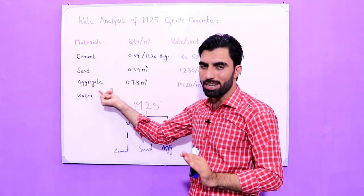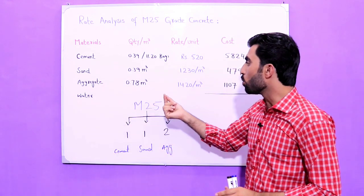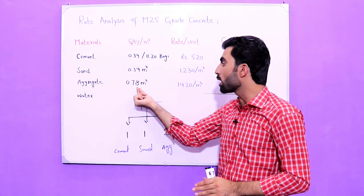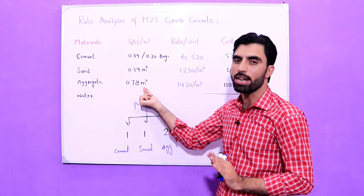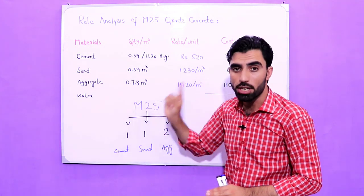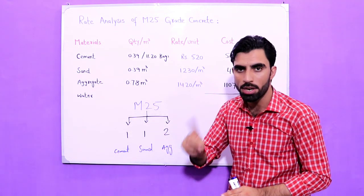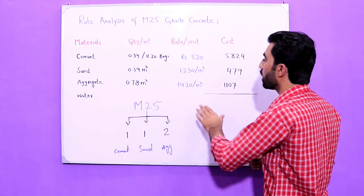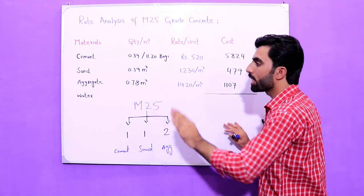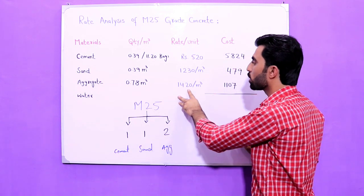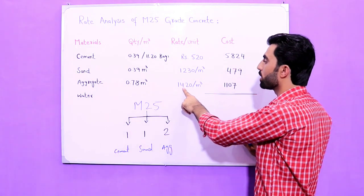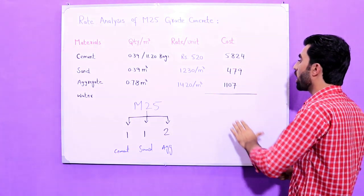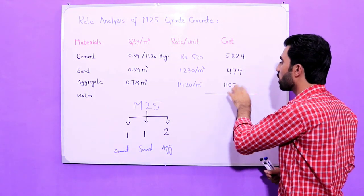For aggregate, we require 0.78 cubic meters of aggregate for one cubic meter of M25 grade concrete. The price of one cubic meter of aggregate is 1,420 Pakistani rupees. So the cost for 0.78 cubic meters comes to 1,107 rupees.